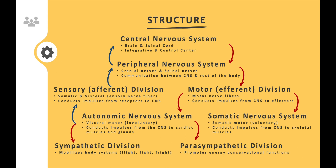To conclude, the nervous system is a combination of the central nervous system and the peripheral nervous system. The central nervous system consists of the brain and spinal cord, each with their own parts and functions. The peripheral nervous system transfers signals to and from the CNS. Within the peripheral nervous system, we have the sensory division and the motor division. The motor division includes the autonomic nervous system and the somatic nervous system, and within the autonomic system, the sympathetic and parasympathetic divisions.